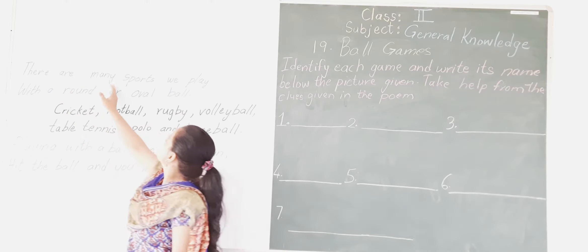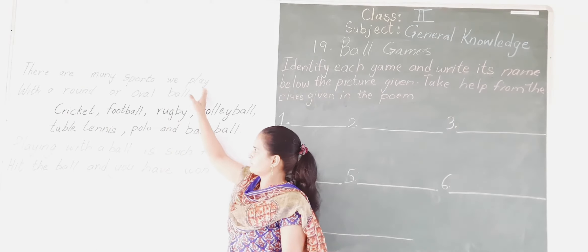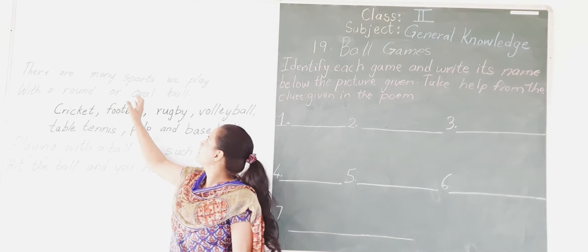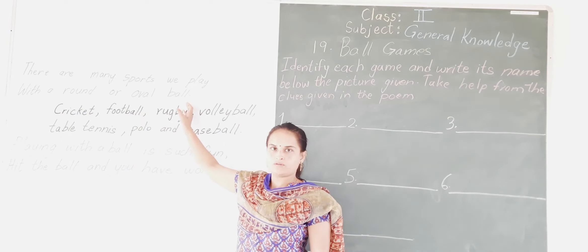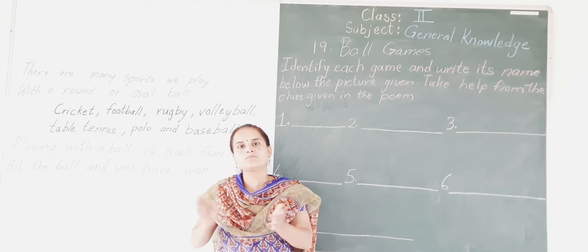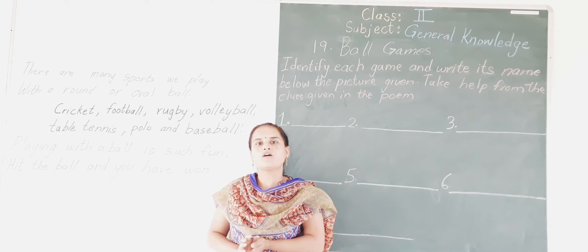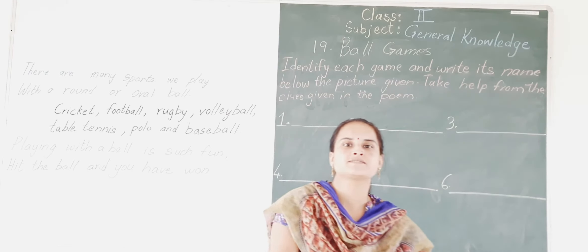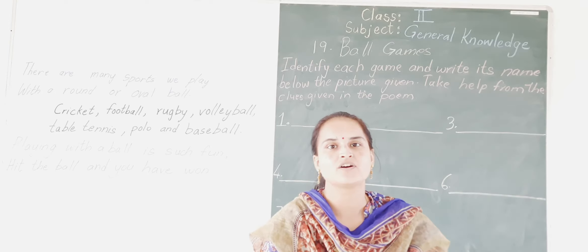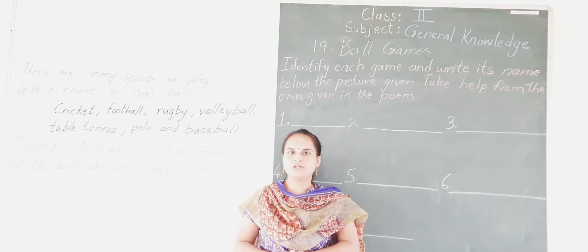There are many sports we play with a round ball. There are many games which we play with a round ball. What is the shape of the ball? The ball is round in shape. And at times it is found in the oval shape also.